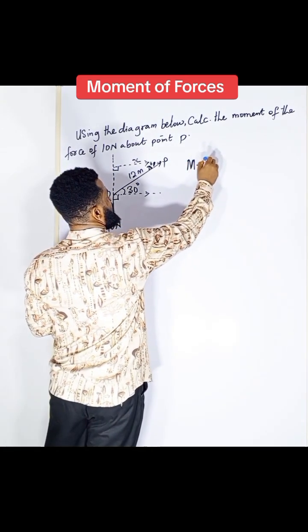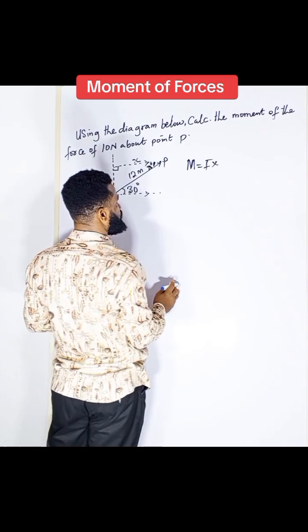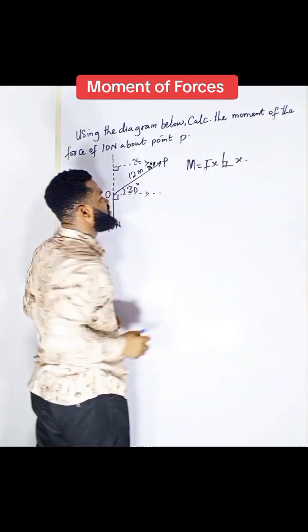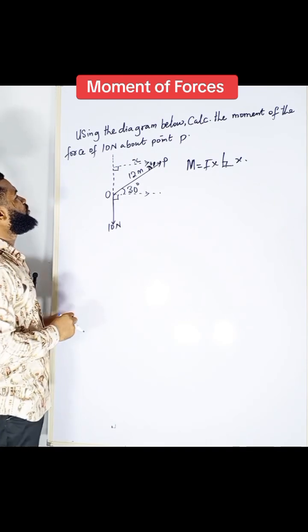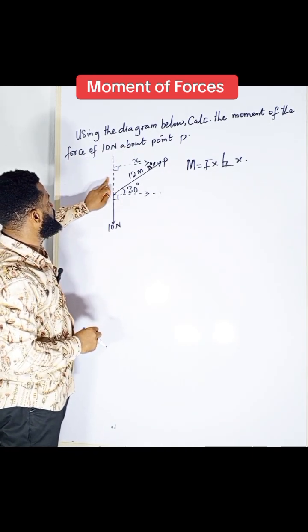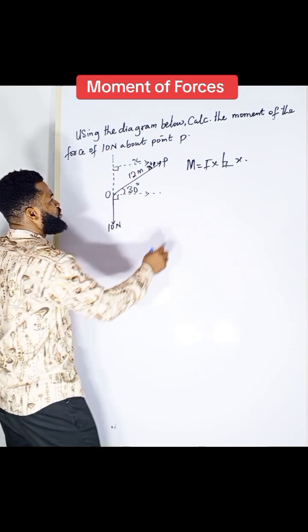Therefore, moment of force is equal to force times this horizontal distance, perpendicular distance. And so, that is it. Now, what is x? The only way I can find x is to say adjacent over hypotenuse. Adjacent over hypotenuse, which is cos.